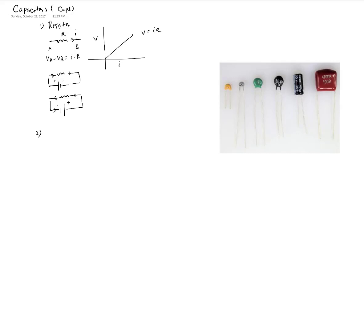A second kind of element we have discussed before are the diodes. Diodes are what we call non-ohmic elements, because they don't follow Ohm's law. For diodes, we have to have a certain amount of forward voltage applied before the current is going to flow. This is the current and that's the forward voltage. Diodes look like cylindrical elements.